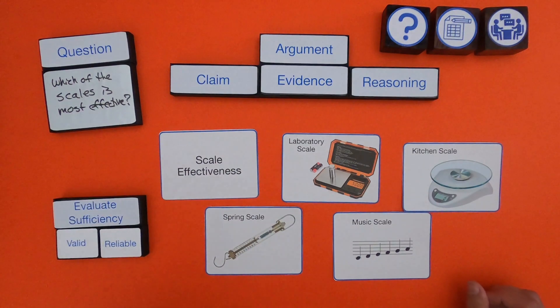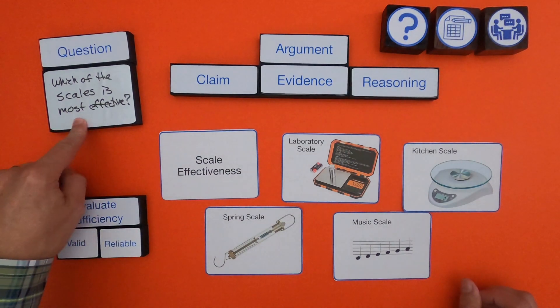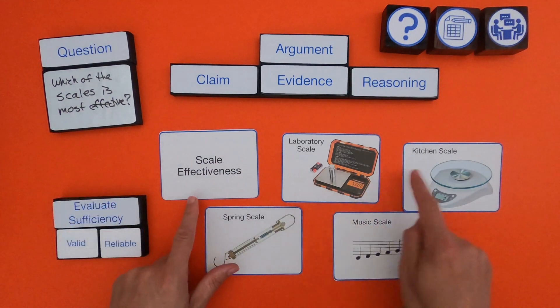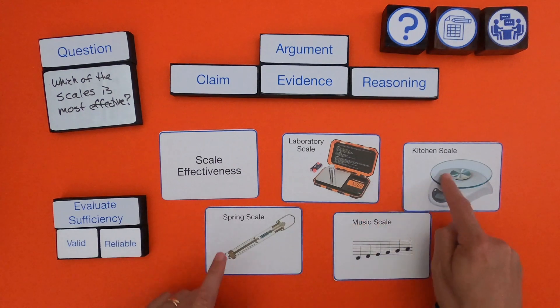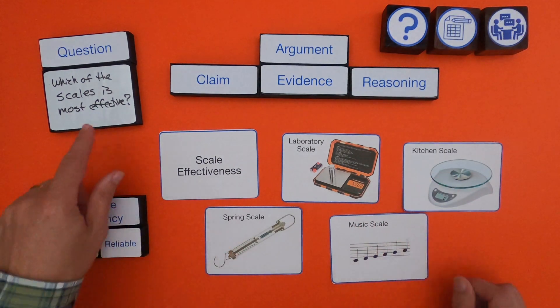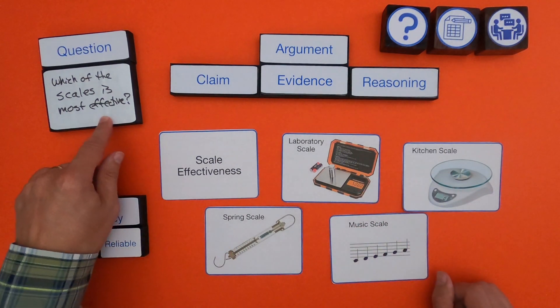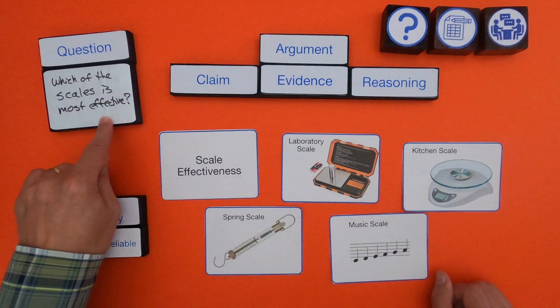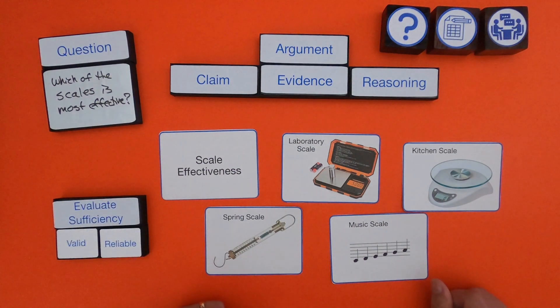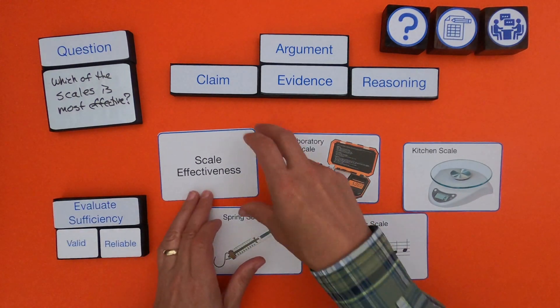The question that we're trying to answer is: which of the four scales — lab, kitchen, spring, and music — is the most effective? That's the question we're trying to answer, or we're trying to present an argument around.